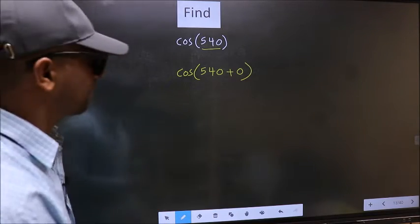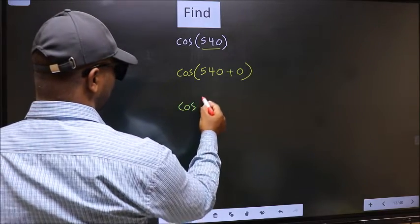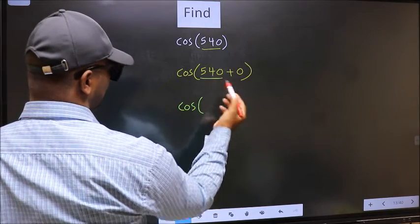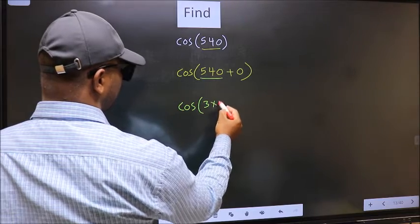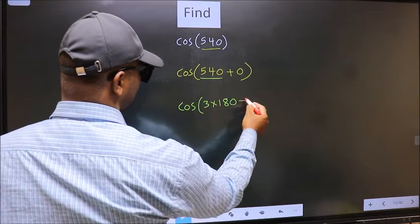Next, cos in place of 540, now we should write 3 into 180 plus 0.